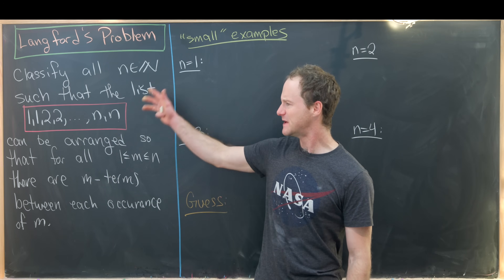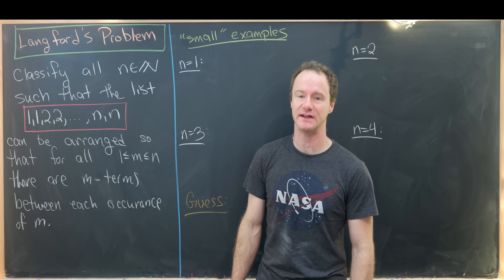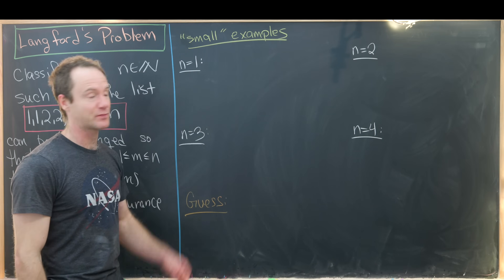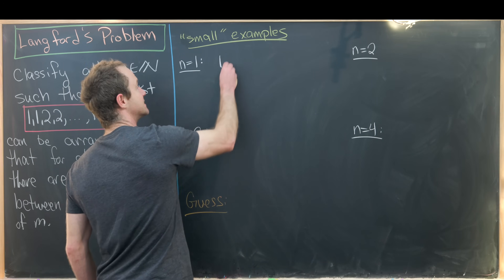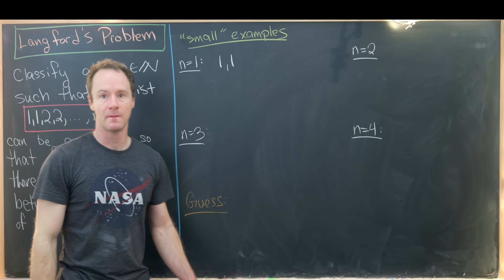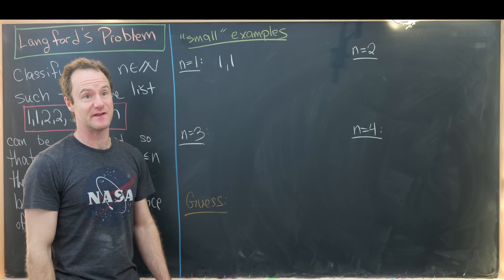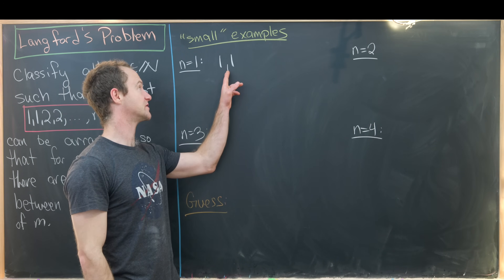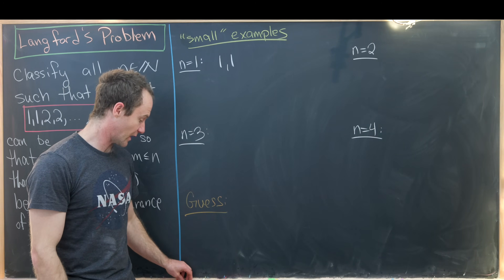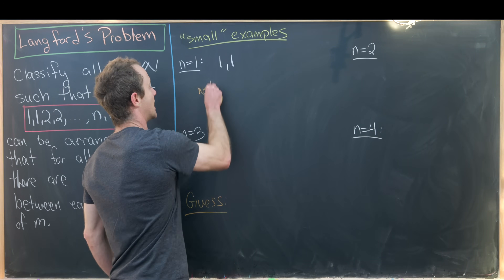There's a bit to parse out here, so let's do some examples to wrap our heads around it. Let's start with n equals 1. Our list will be 1, 1, but there's no way to construct an arrangement so that you have one term between the two 1s because we've run out of terms really quickly. So n equals 1 is not possible.